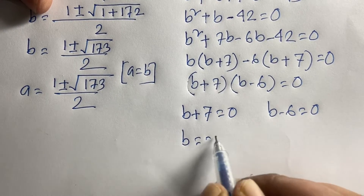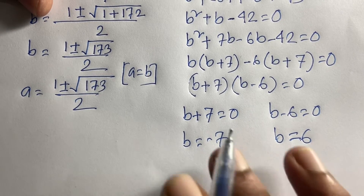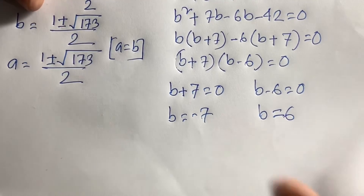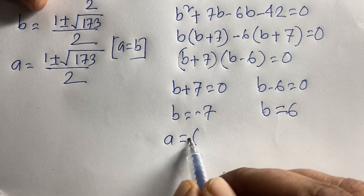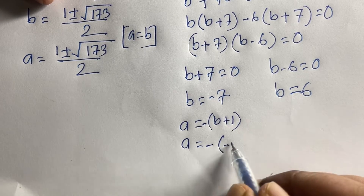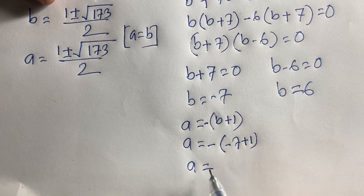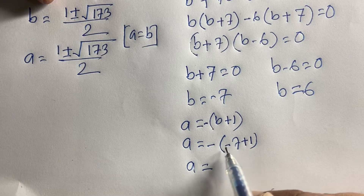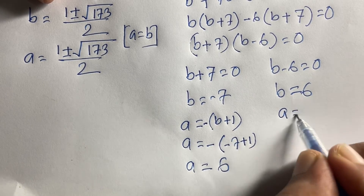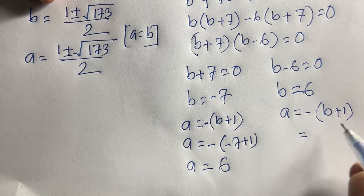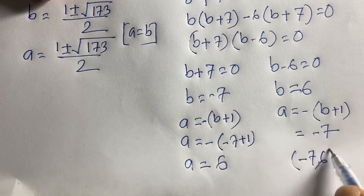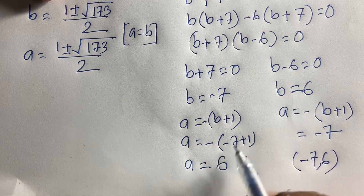Since A equals minus(B+1): when B equals minus 7, A equals minus(minus 7 + 1) equals minus(minus 6) equals 6. When B equals 6, A equals minus(6+1) equals minus 7. So the integer solutions are A equals 6, B equals minus 7, or A equals minus 7, B equals 6.